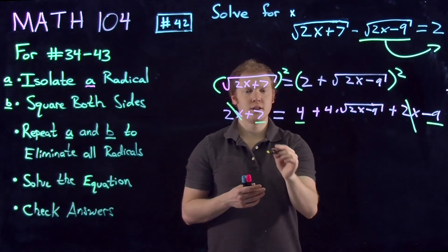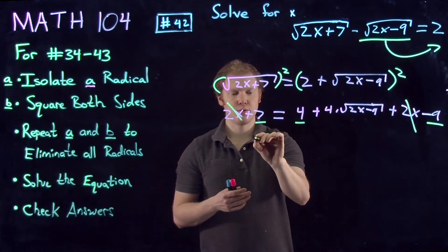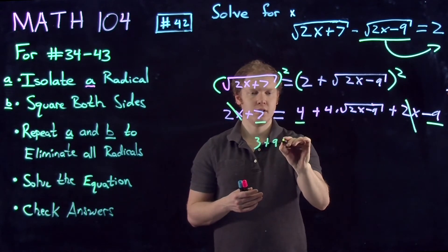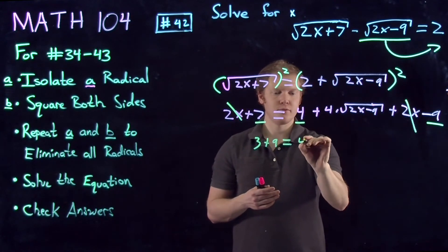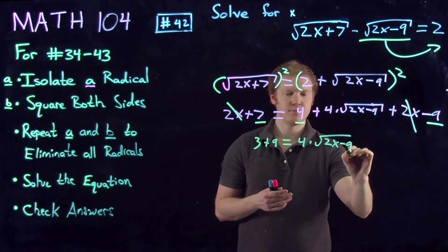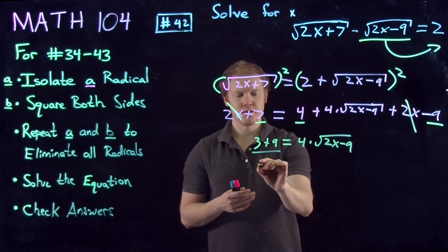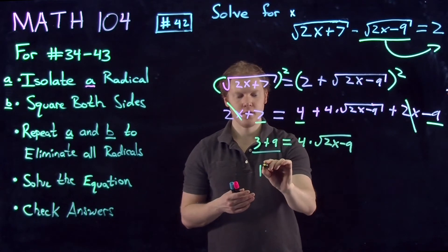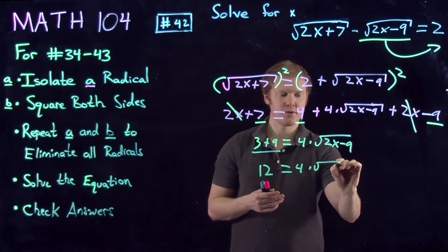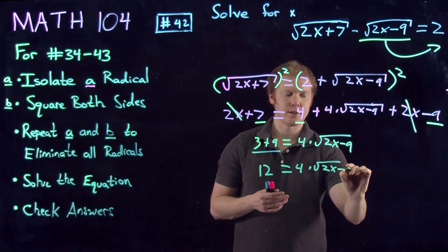Next we'll isolate all the constant terms that do not have an x with them, which gives us 3 plus 9, which equals 4 times the square root of 2x minus 9. Combining these like terms, we get 12 equals 4 times the square root of 2x minus 9.